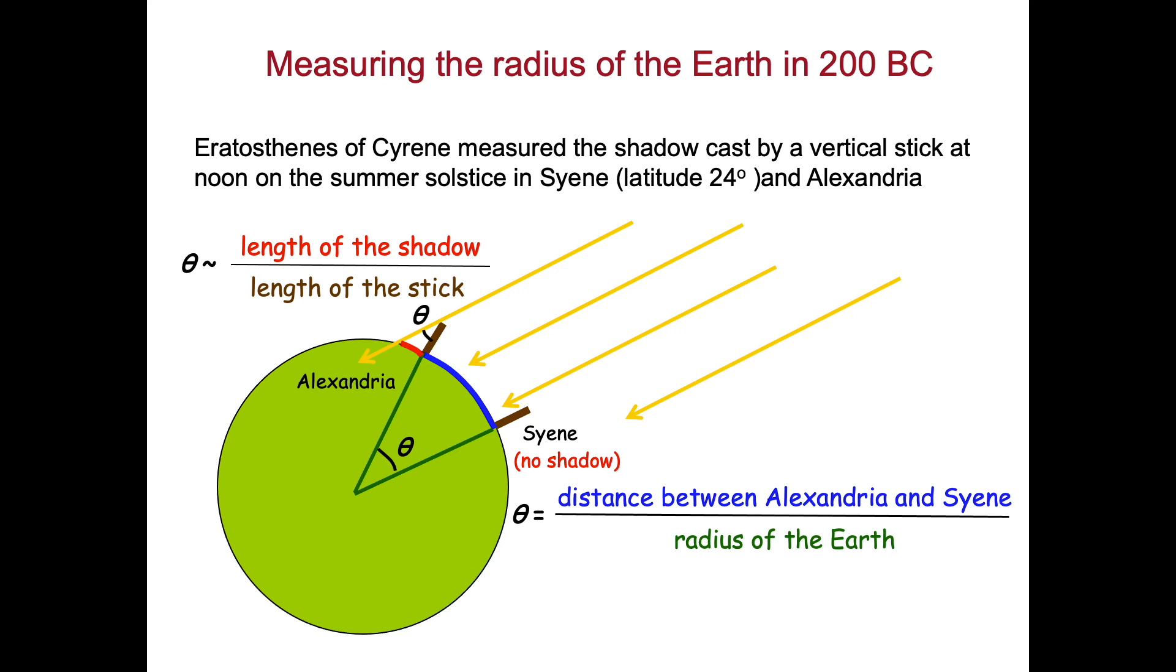He also knows that in geometry, this theta here equals the theta between the two points, which is the distance between Alexandria and Syene divided by the radius of the Earth. From that, he got the radius of the Earth to be around 7,000 kilometers, which was 10% larger than the actual value. But pretty darn good for a measurement using shadows in ancient Greece.